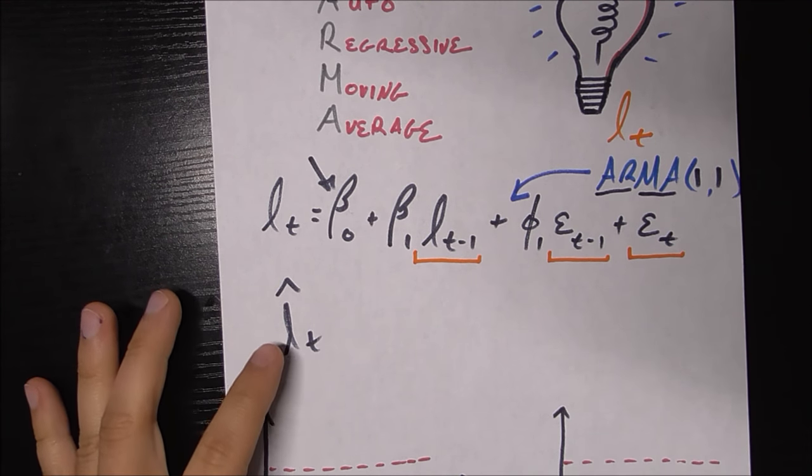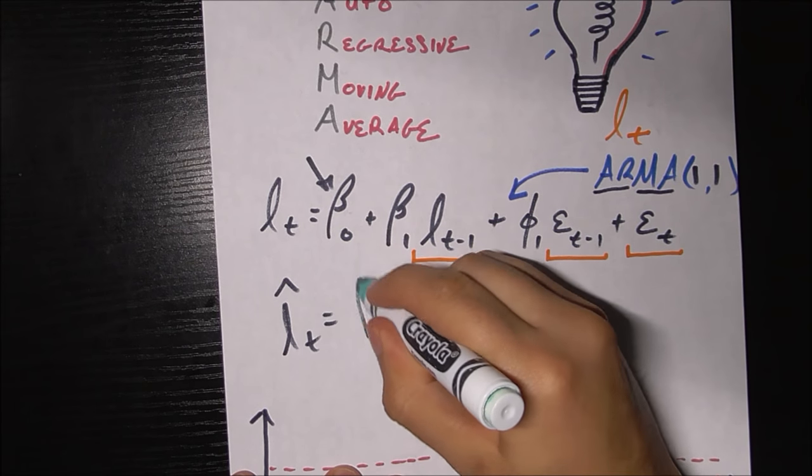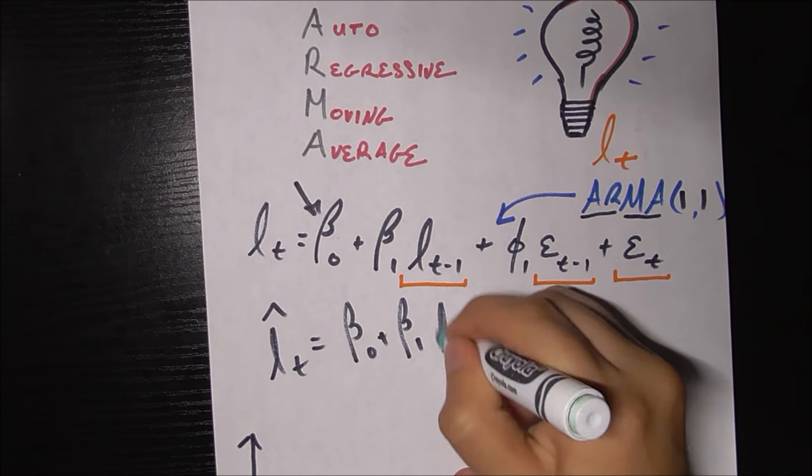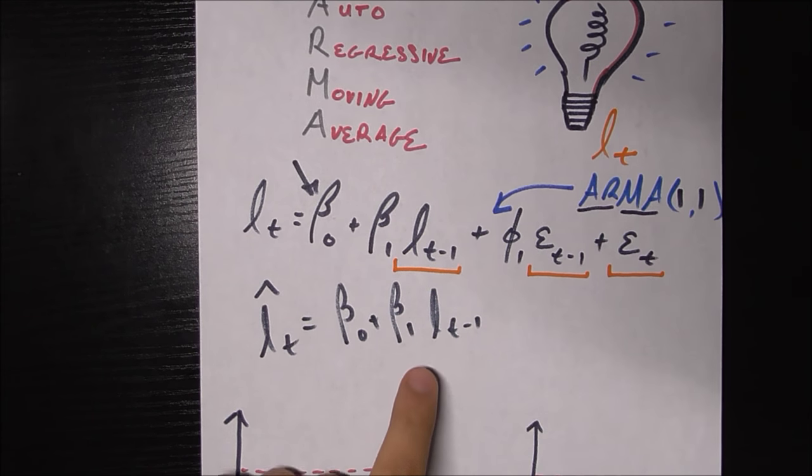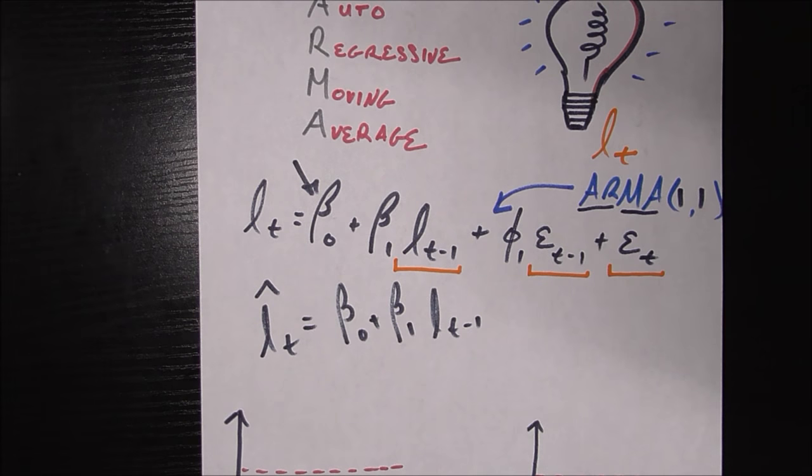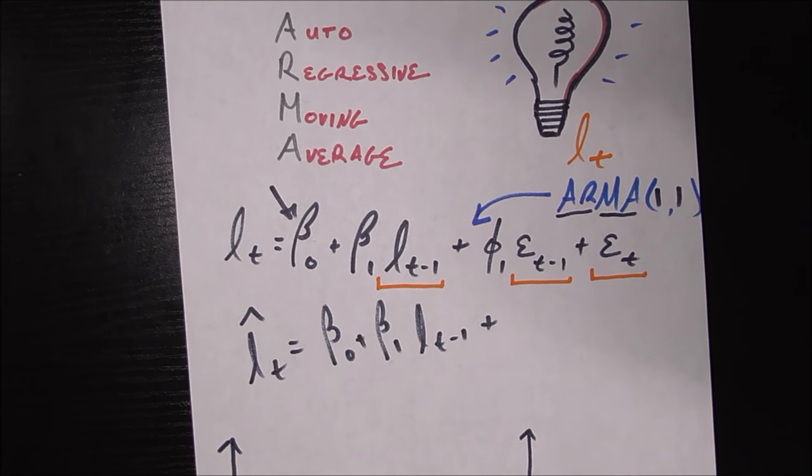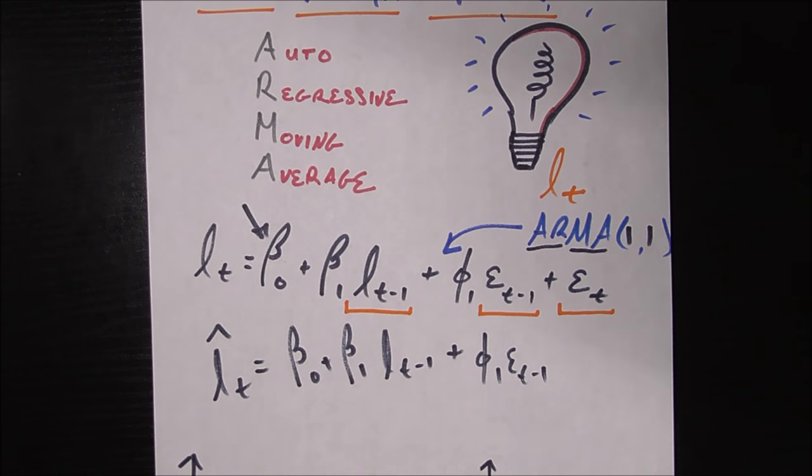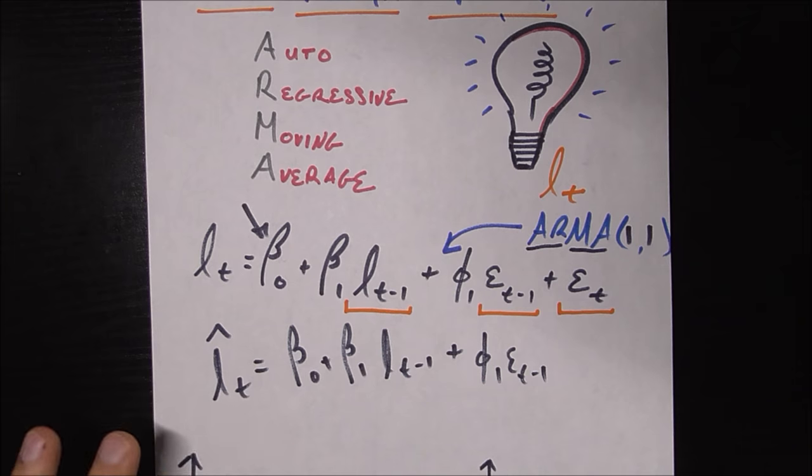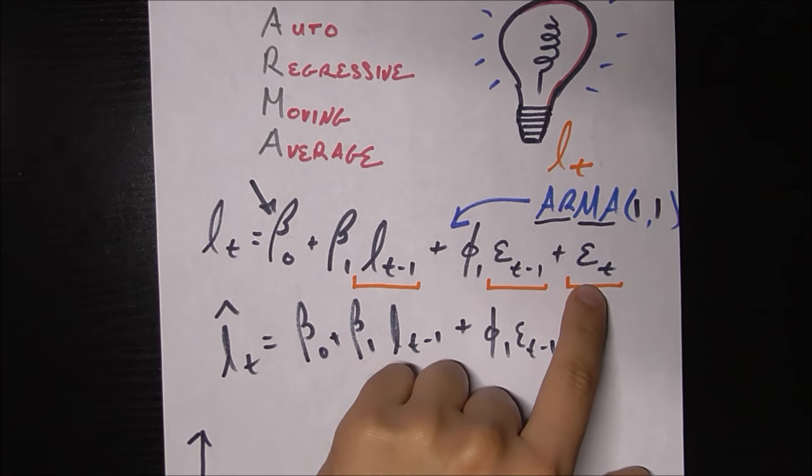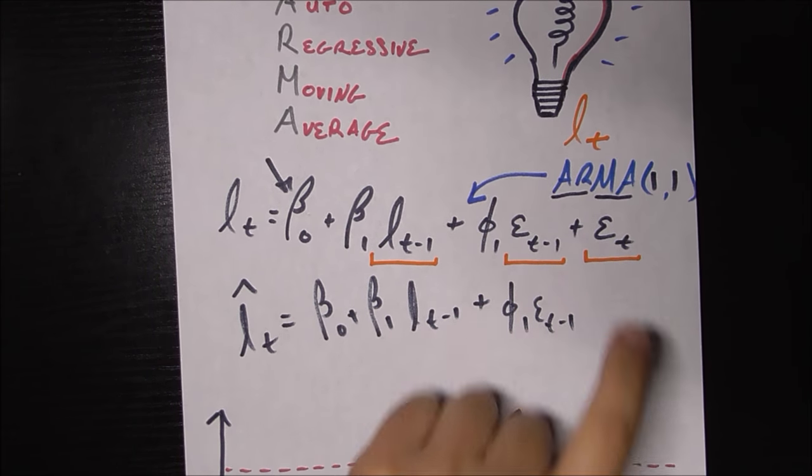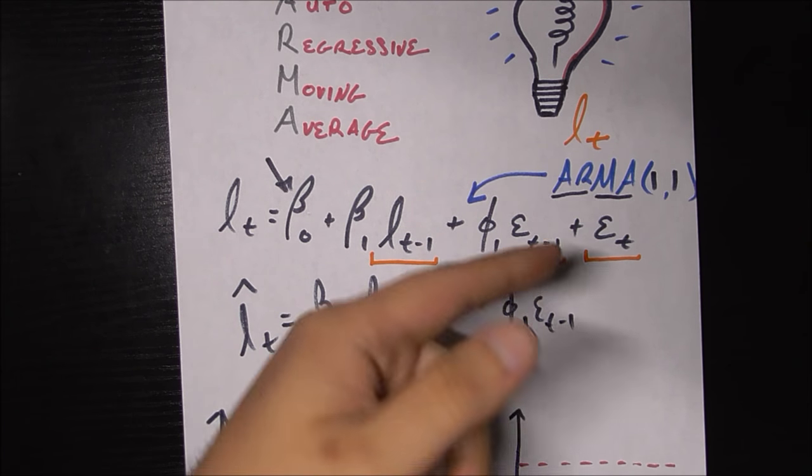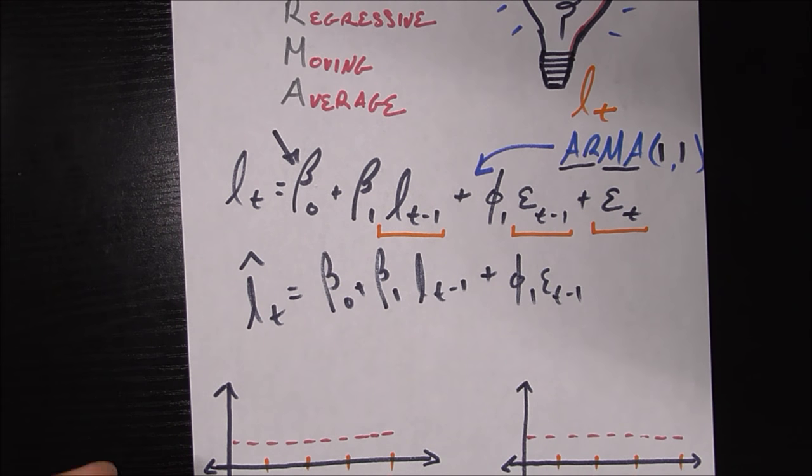My predicted value for light bulbs created this month is equal to beta sub 0, plus the coefficient beta sub 1, L sub T minus 1. I have access to the exact number of light bulbs I needed last month because last month is in the past. Plus phi sub 1 epsilon sub T minus 1. I also have access to my error from last month. But I don't have access to the error from this month because it hasn't happened yet. That's how you would use an ARMA(1,1) model to make a prediction.